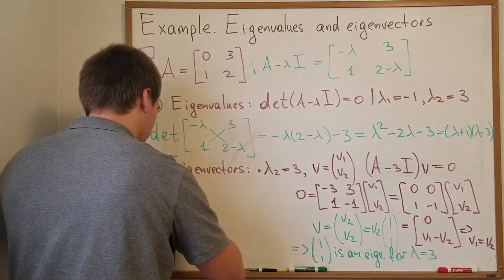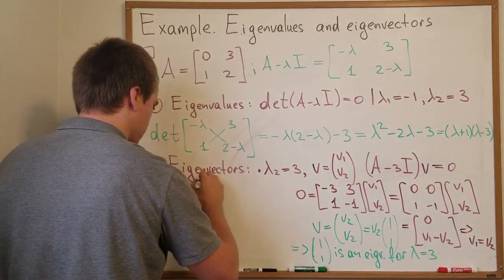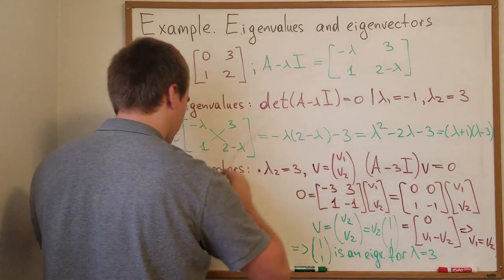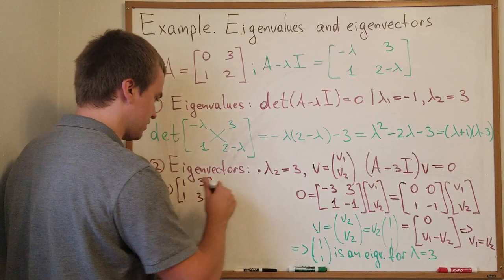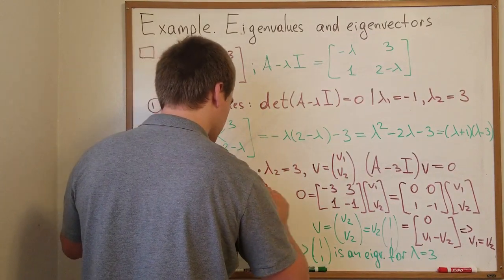So I will have for lambda 1 I will have matrix 1, 3 and 1, 3. If I'm going to do row reduction I will get just matrix 1, 3, 0, 0.